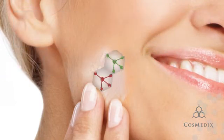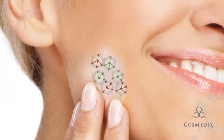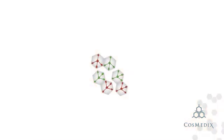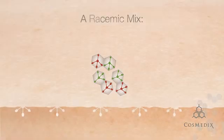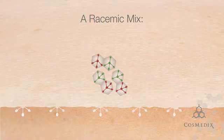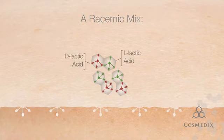Many ingredients contain both forms in an achiral or racemic mix. Here's an example of a product containing both the D and L forms of lactic acid, a popular milk-based exfoliant.